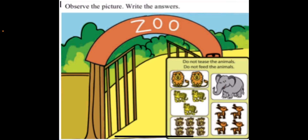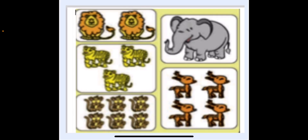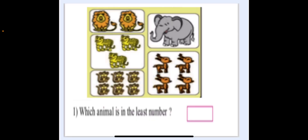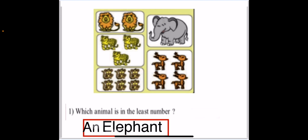Now let us solve the exercise given on page number 76 in our maths textbook. Observe the picture and write the answers. This picture is of a zoo and you can see there are different animals. Our first question is: which animal is in the least number? Least number means less in number — and the answer is elephant.